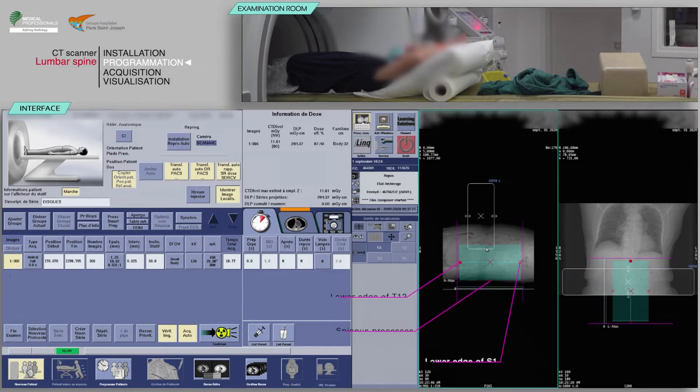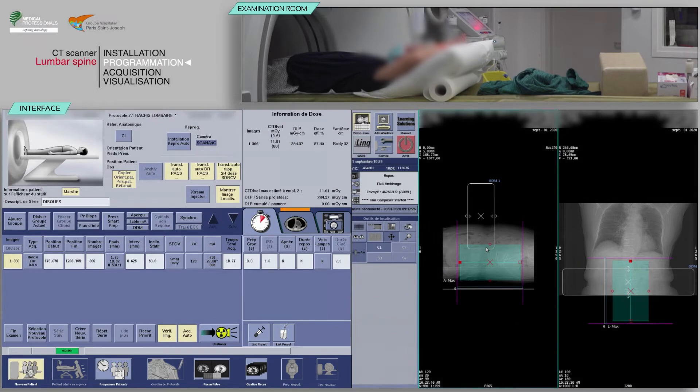Place your slices box on the lateral localizer, covering from the lower edge of T12, superiorly, to the lower edge of S1, inferiorly.